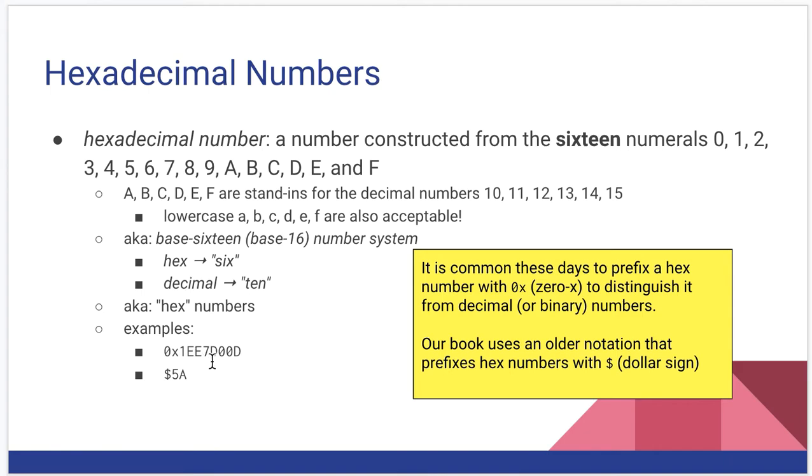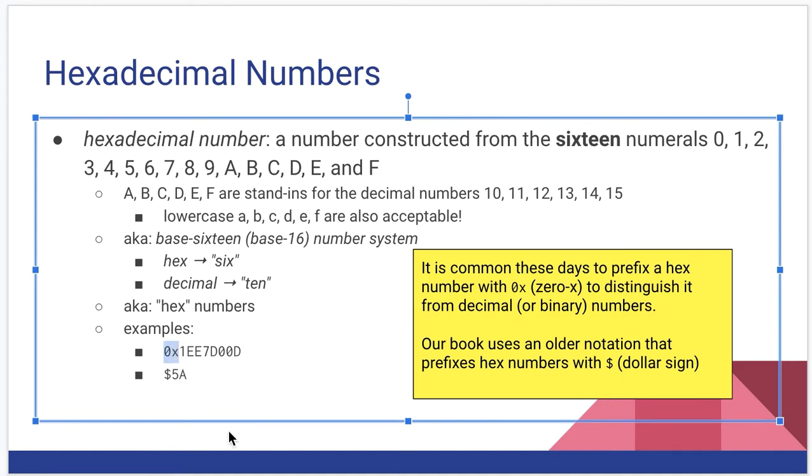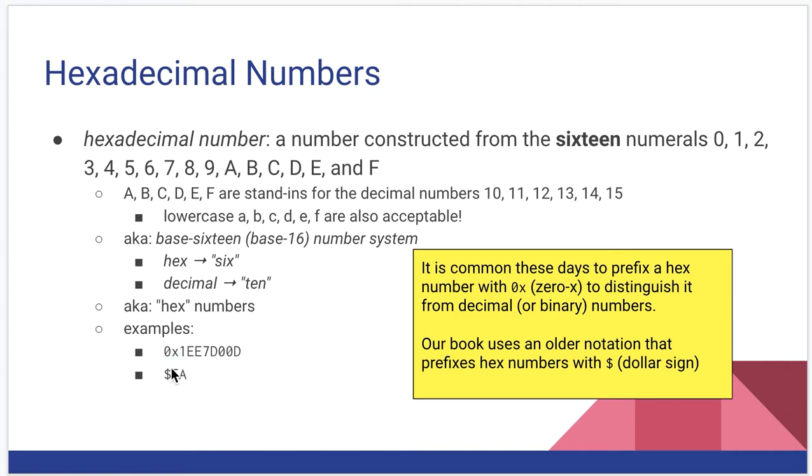And some examples here: 1EE7D00D or 5A. As the sidebar says, it's common these days to preface a hexadecimal number with 0x to indicate that it is hexadecimal. Our book uses an older terminology where you prefix hexadecimal numbers by dollar sign. We're going to use both of these interchangeably. Probably more of the 0x in the earlier part of the semester, probably more dollar sign later semester when we're actually looking at assembly written for the 6502 processor.